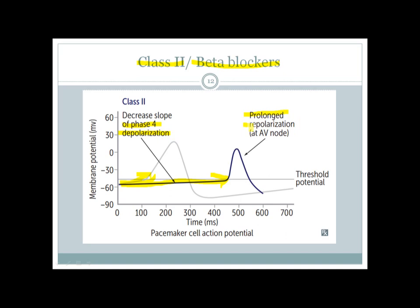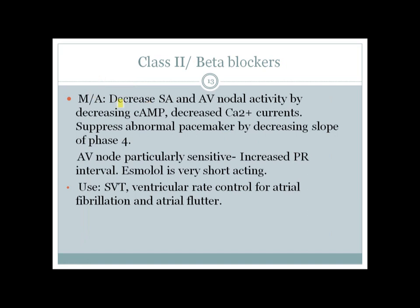The mechanism of class 2 agents is decreasing SA and AV nodal activity by decreasing the slope of phase 4. They do this by decreasing cyclic AMP and decreasing calcium currents. The AV node is particularly sensitive to beta blockers, increasing the PR interval. Esmolol is a very short-acting class 2 agent. All beta blockers are class 2 agents.